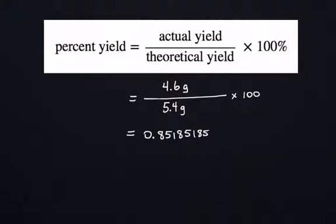0.85185185. Looks like it's just going to repeat. I'm going to multiply that by 100. I do that to move that decimal over and create a percent. So when I move that decimal point over two to the right, I get 85.185185.